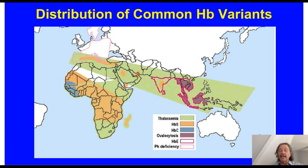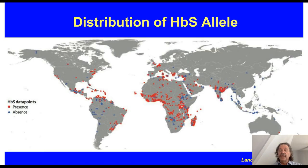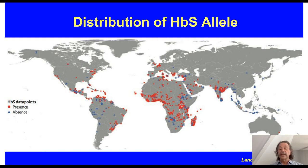This slide shows the distribution of common hemoglobin variants. Thalassemia is shown in green. Hemoglobin S — the second most common — is in orange, predominantly in Africa and the Mediterranean region. Hemoglobin C is in West Africa, and hemoglobin E in purple is predominantly in Asia. Because of travel and migration, the actual distribution is different. For example, hemoglobin S is also found in large numbers in North and South America, as well as Europe.